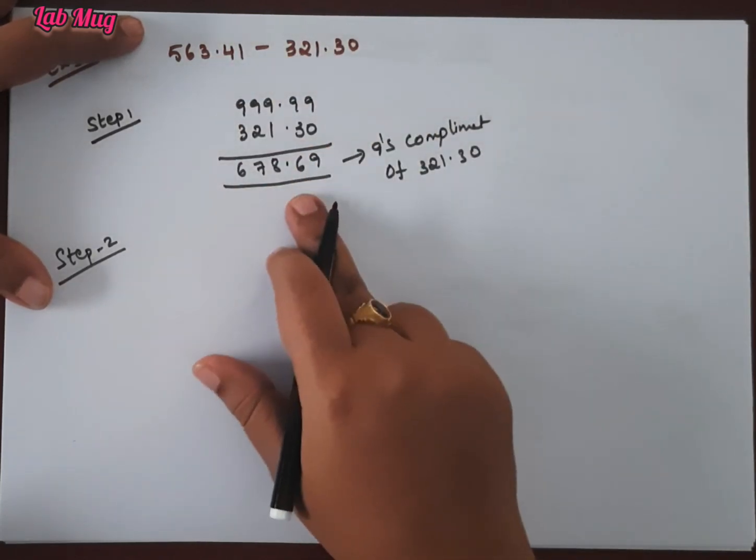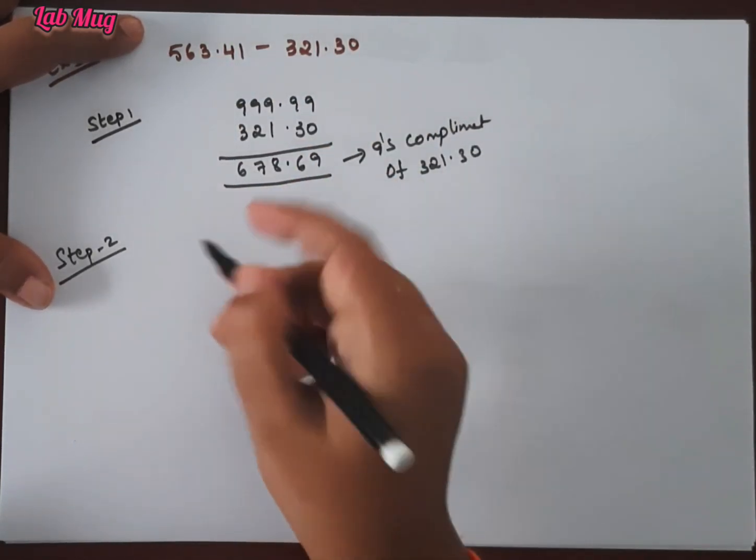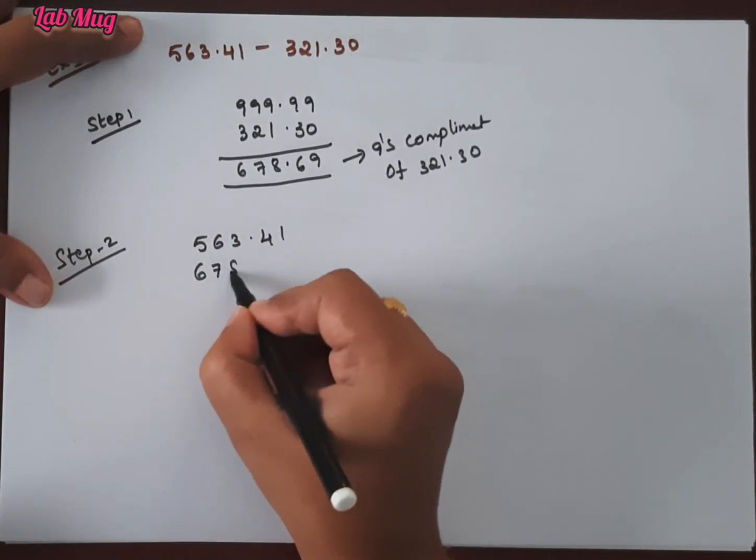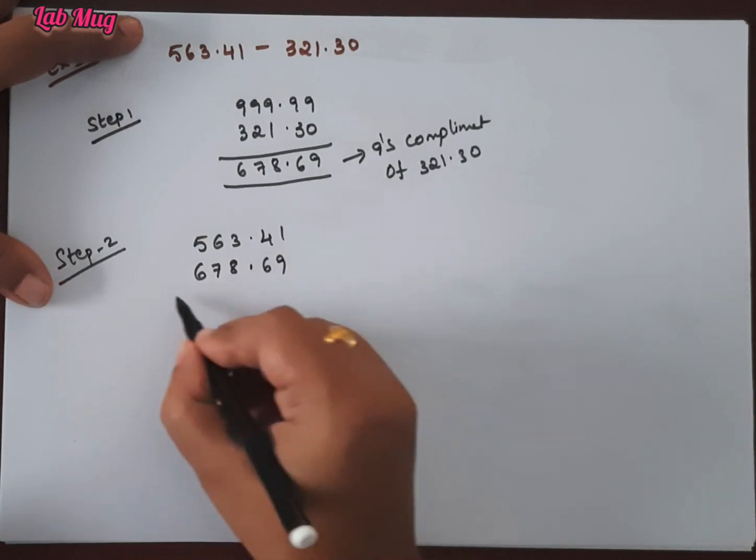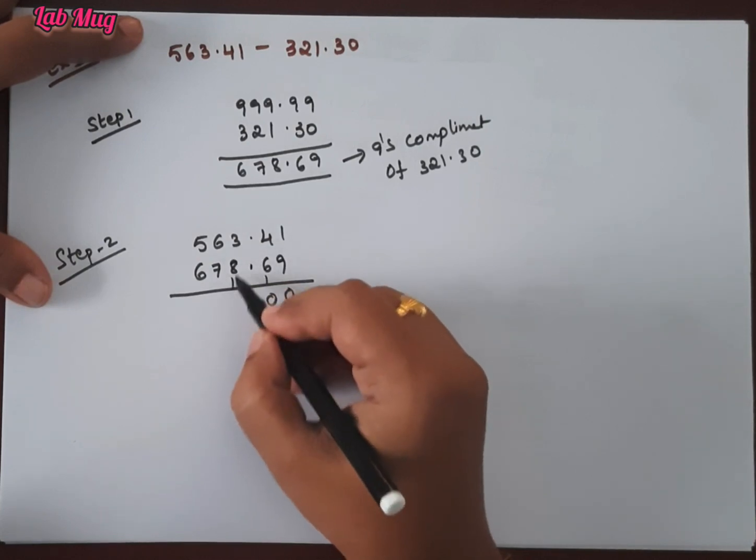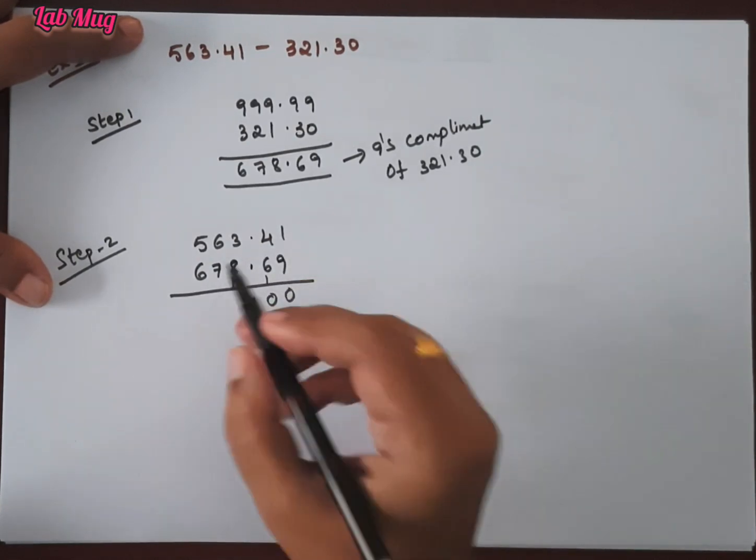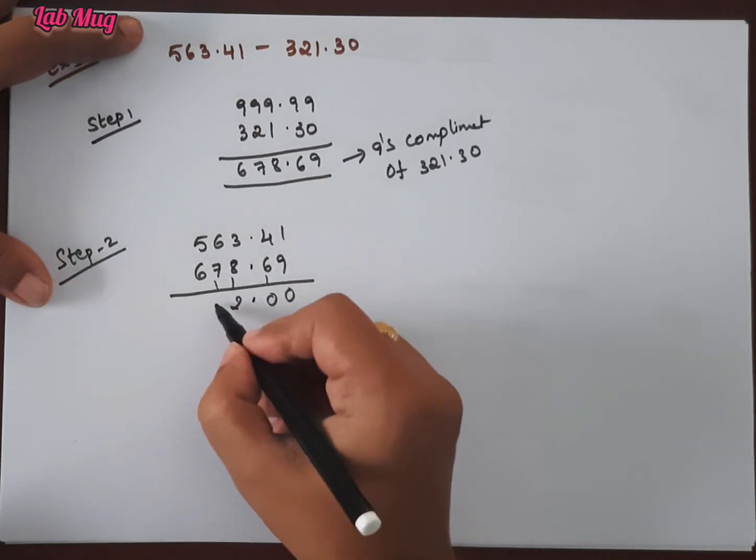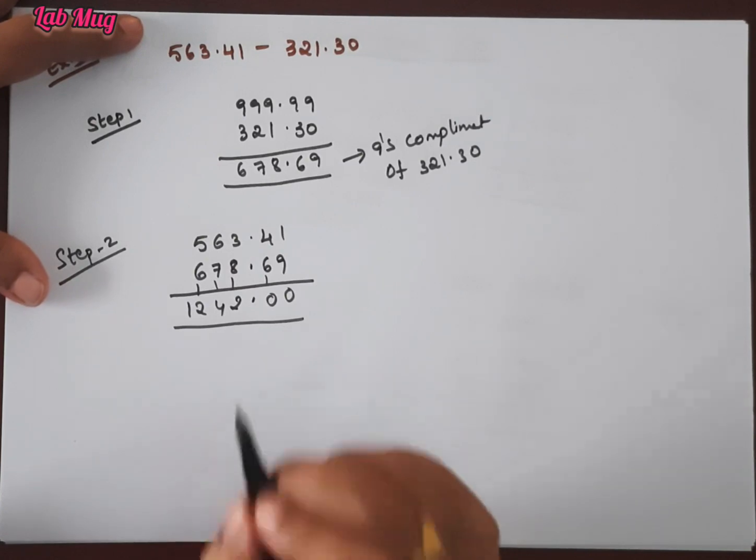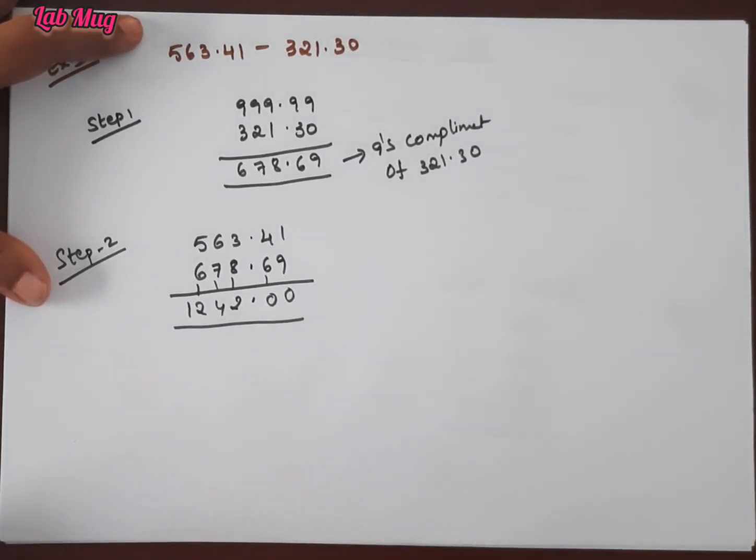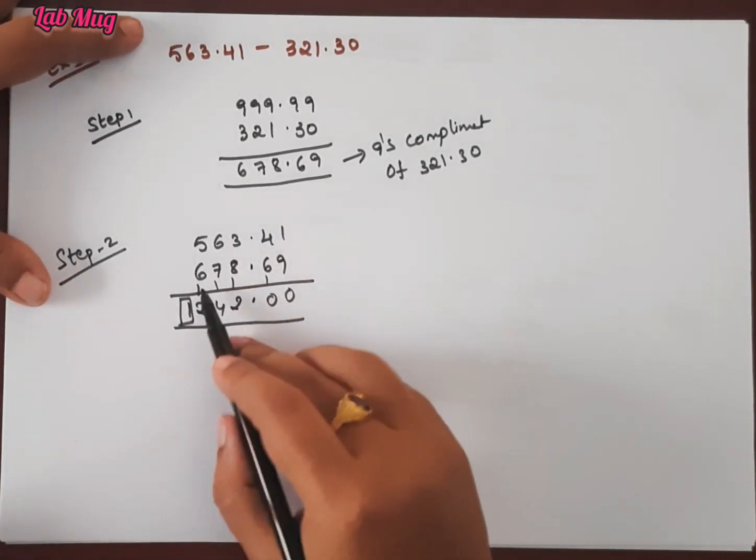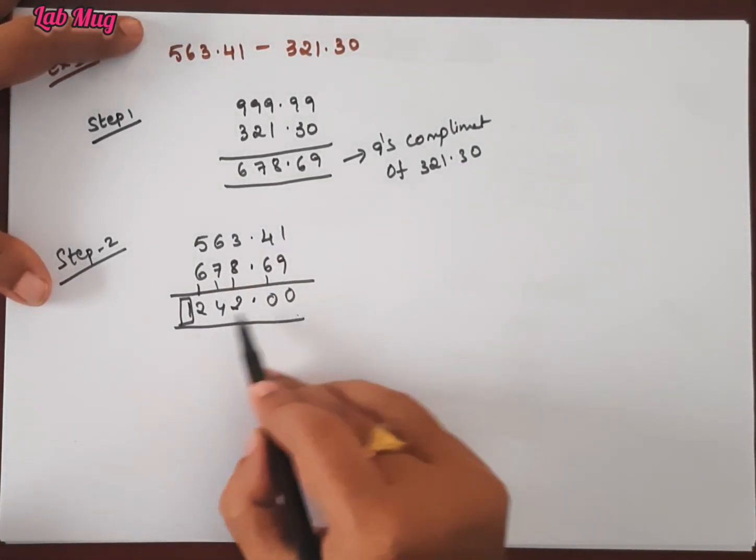Next, step 2: The first number and the 9's complement should be added. 563.41 plus 678.69. Adding: 1 plus 9 is 10, carry 1. 4 plus 6 plus 1 is 11, carry 1. 3 plus 8 plus 1 is 12, carry 1. 6 plus 7 plus 1 is 14, carry 1. 5 plus 6 plus 1 is 12. So the answer is 1242.10. Now observe: the result has more digits than the original three digits, two decimal places formation.